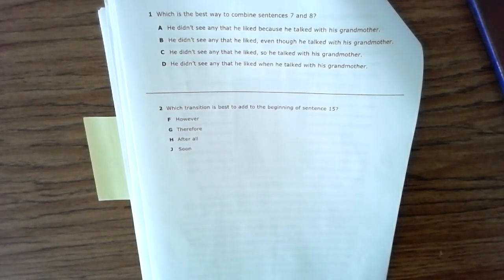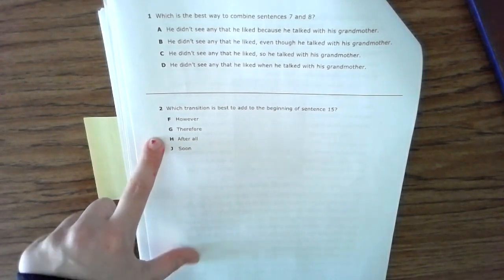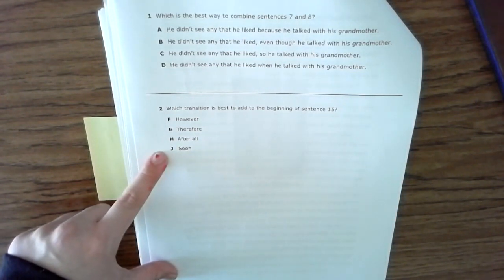Number two: Which transition is best to add to the beginning of sentence 15? F: however. G: therefore. H: after all. J: soon.